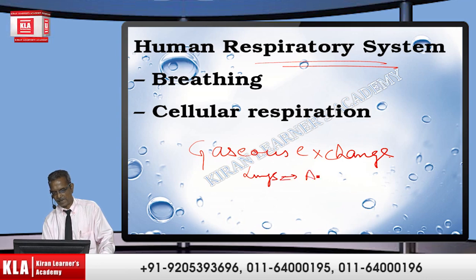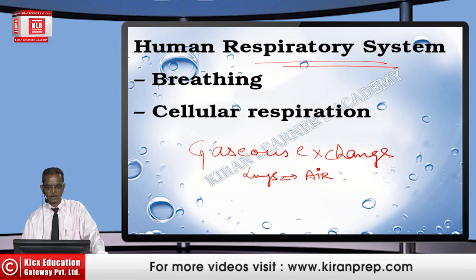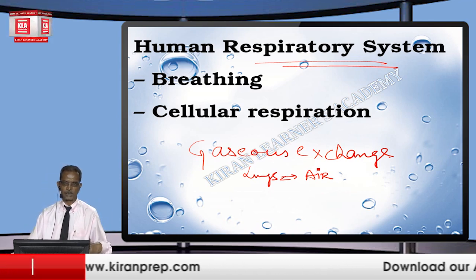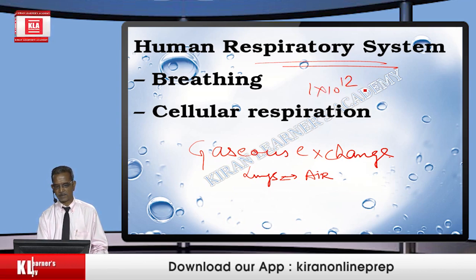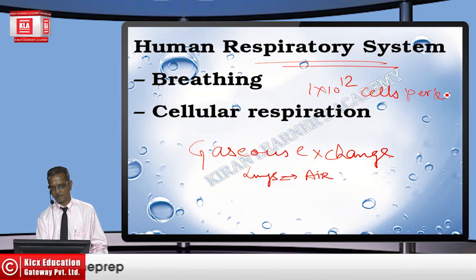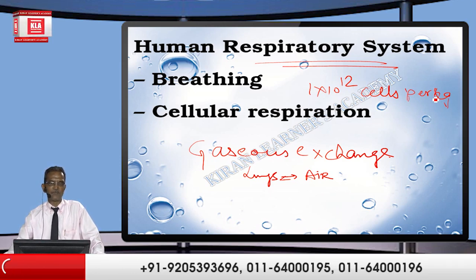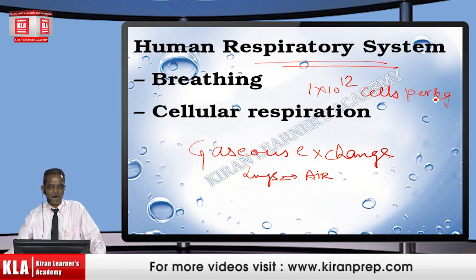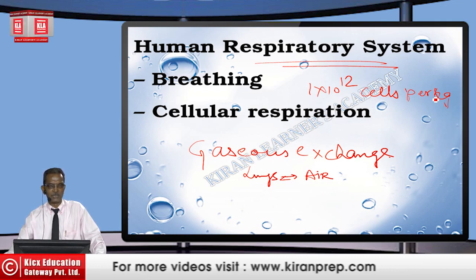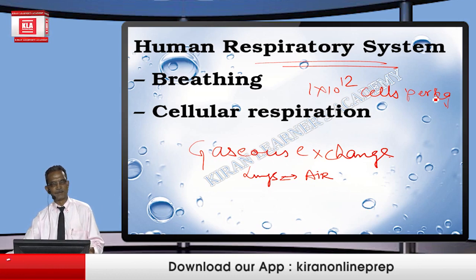When we talk of breathing, we are talking of gas exchange between the lungs and air. When we talk of cellular respiration, we are talking about whatever gas has been inhaled or breathed in — when it reaches the body cells. There are 10 to the power 12 number of cells per kilogram of our body weight, and each cell is going to get the gas that we have inhaled, which has diffused into the blood.